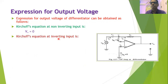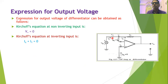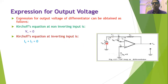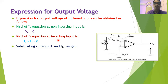We can also write the Kirchhoff's equation at the inverting input of the operational amplifier. At the inverting input, there are two currents meeting — IC and IF — and therefore we can write the Kirchhoff's equation: IC plus IF equals zero. Note that the bias current IB2 is equal to zero.